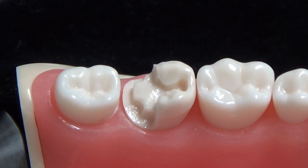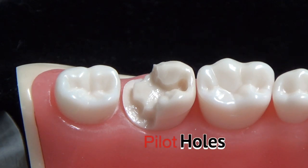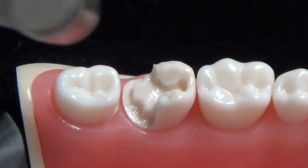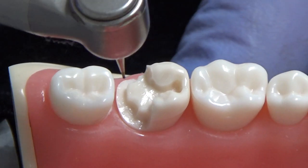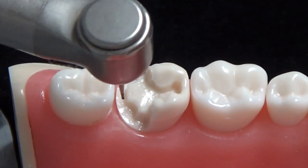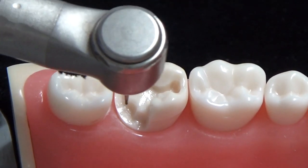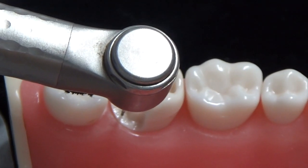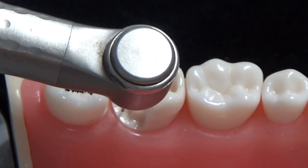To place the pins, we first need to create pilot holes. Pilot holes can be created with a quarter burr, and the safest place to do it is at the line angles — half a millimeter into the dentin, avoiding the pulp and the PDL space.